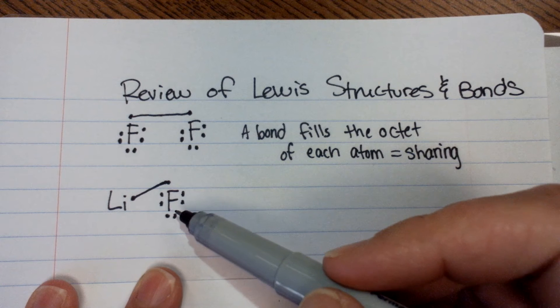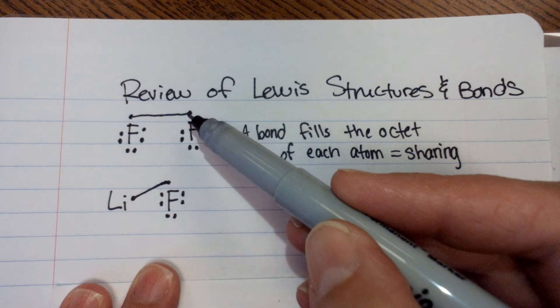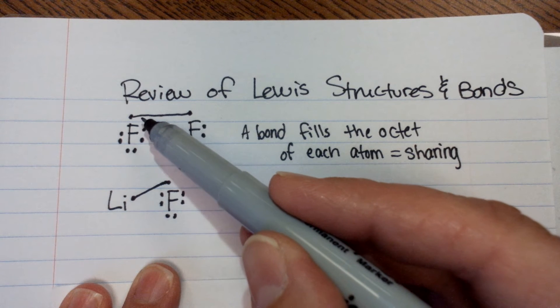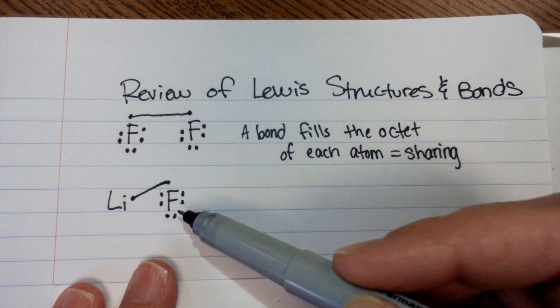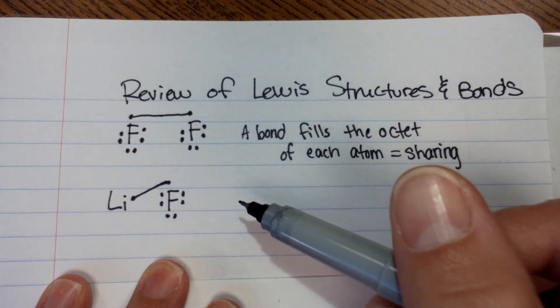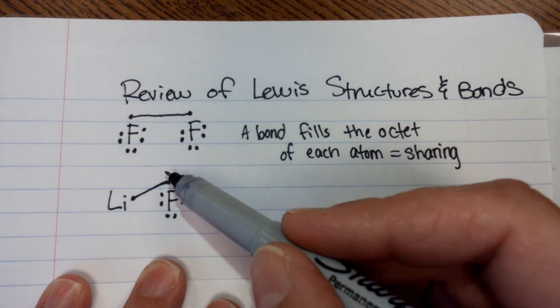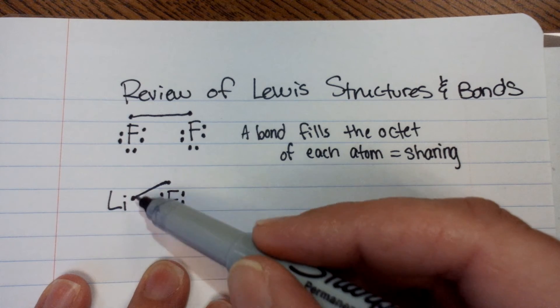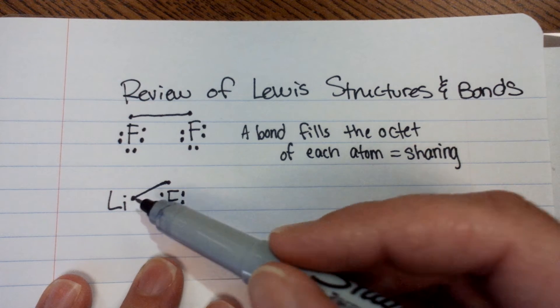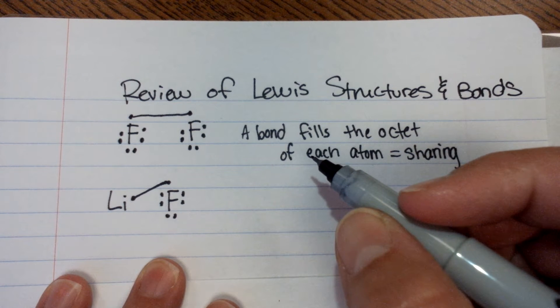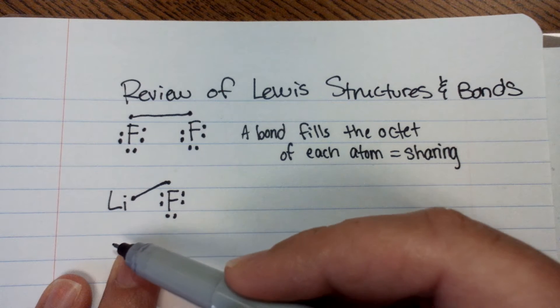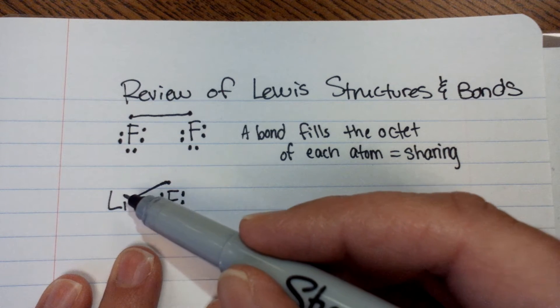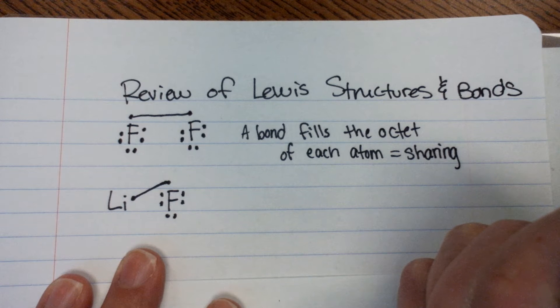So if we consider these, we said up here that these electrons in the bond can fly around either atom in the bond. That makes sense. Look at this situation with lithium and fluorine. If this electron from fluorine goes and flies around lithium, does it fill lithium's octet? No. It would only give lithium two electrons flying around the outer shell. And that's not enough to fill that second energy level.